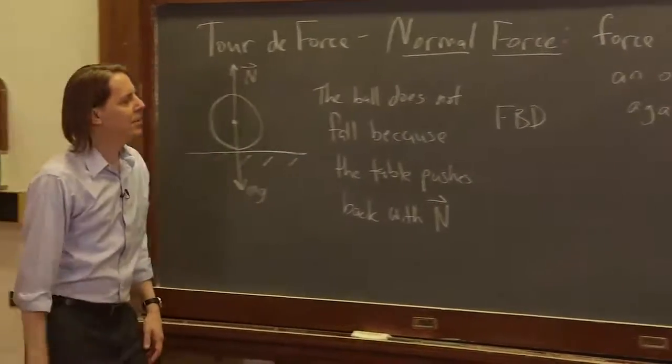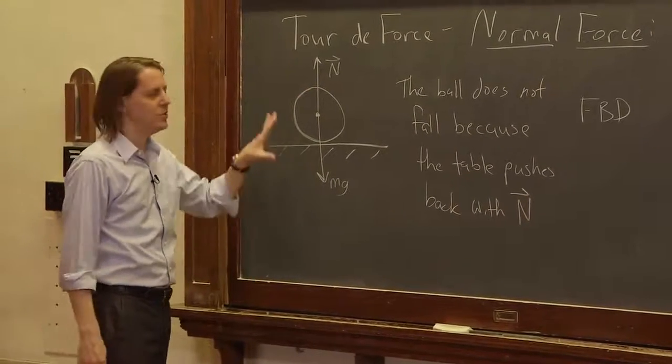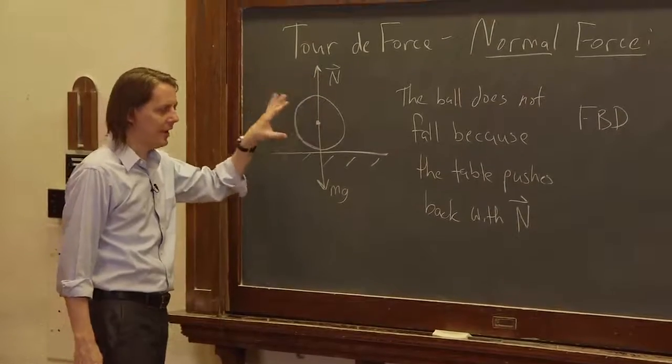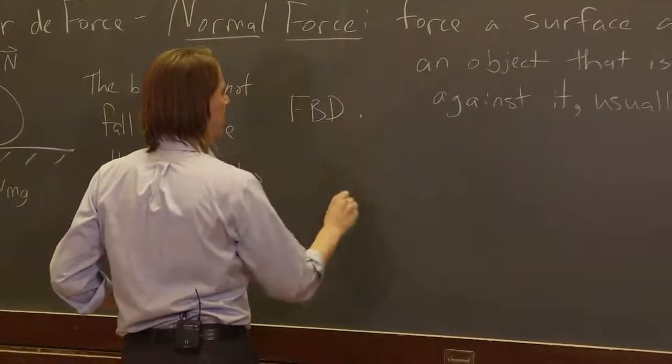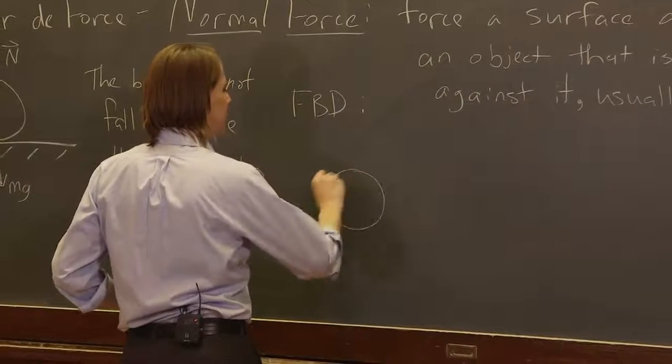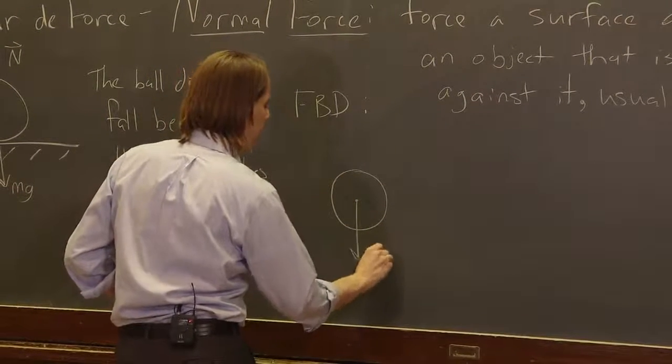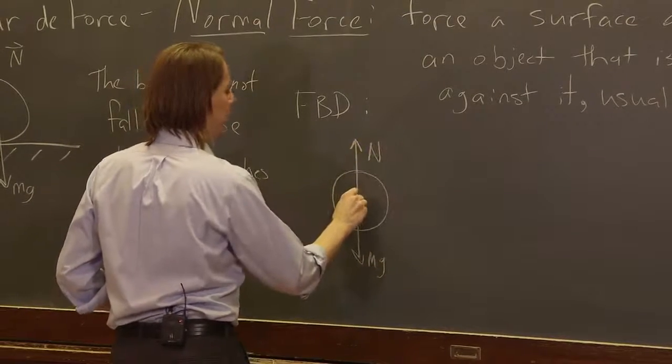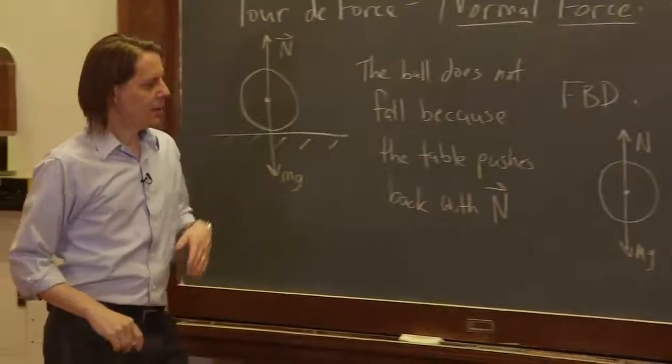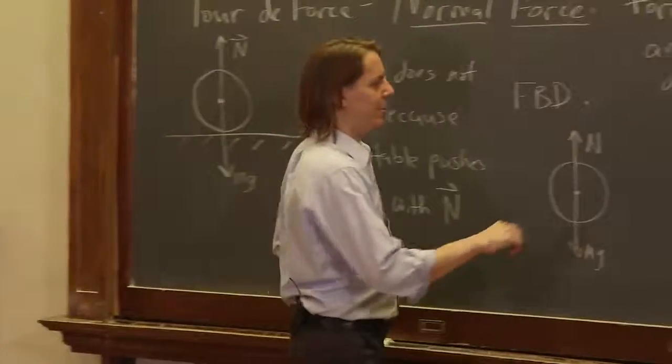So a free body diagram is where the thing you're trying to analyze, the mass, that's the only thing you draw. And you just think about all the forces on that mass and you apply Newton's second law. So here's our free body diagram. In this case, here's Hal or Al, they feel Mg down and they feel normal force up. Once you have it drawn, you've included all the forces. You say sum of the forces equals Ma.